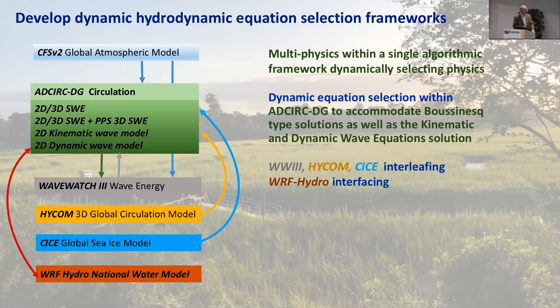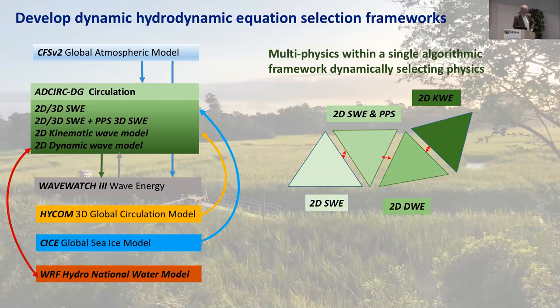Next, the hydrologic models. In some areas of the floodplain, you might want to actually solve the kinematic wave and the dynamic wave equations — very important when you want an integrally coupled model. Over here you might solve the shallow water equations, in the next zone the Boussinesq class models, and in the flat portion of the floodplain the dynamic wave equations, and in the higher portion the kinematic wave equations. This is all integrated into the discontinuous Galerkin-based computational framework.